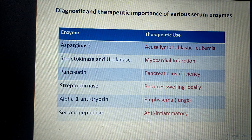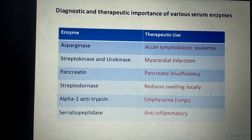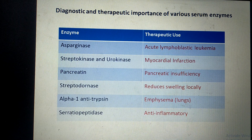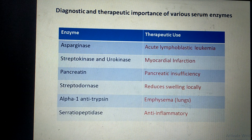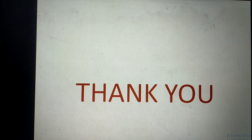Alpha-1 antitrypsin is used in the lung disease emphysema. Serratiopeptidase is an anti-inflammatory drug given orally to reduce inflammation and associated pain. This concludes the therapeutic importance of enzymes. One more aspect — the use of enzymes in the laboratory — is given as a separate competency and will be studied in the next lecture. Thank you very much.